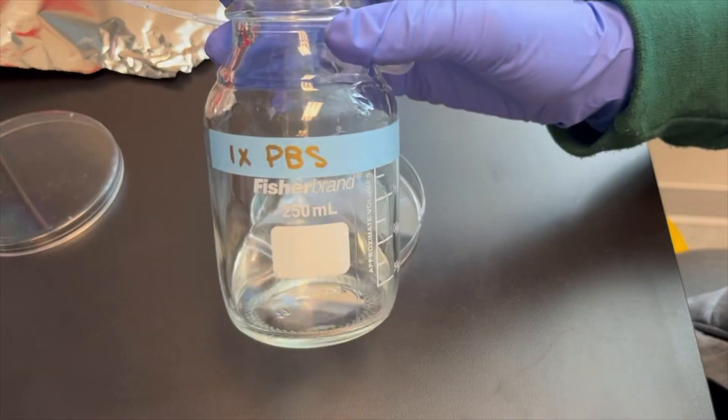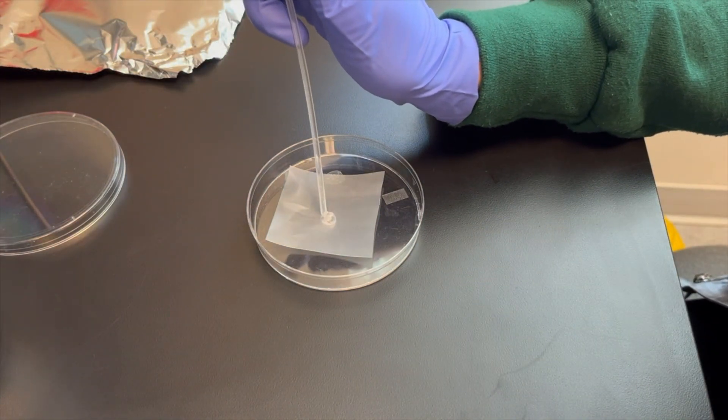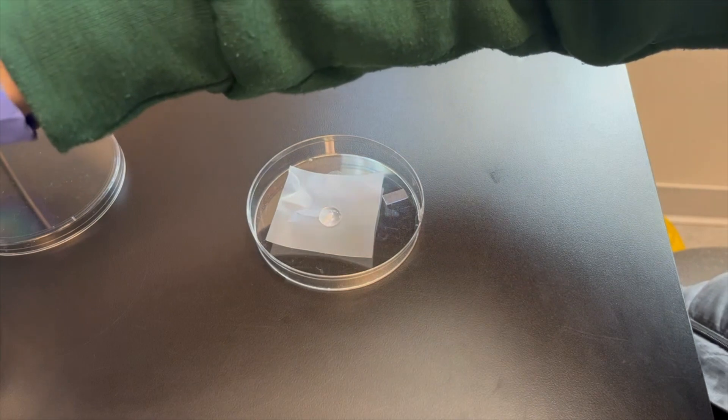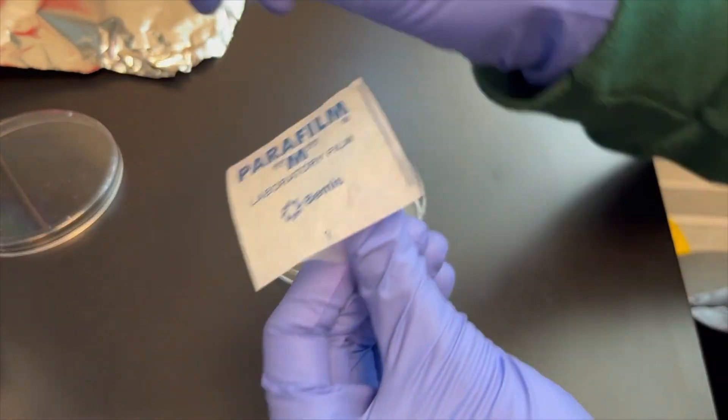Next, place a drop of PBS onto the slice and seal with another piece of parafilm by placing a second square of parafilm over top and pressing the squares together using a pen or handle of a razor blade.